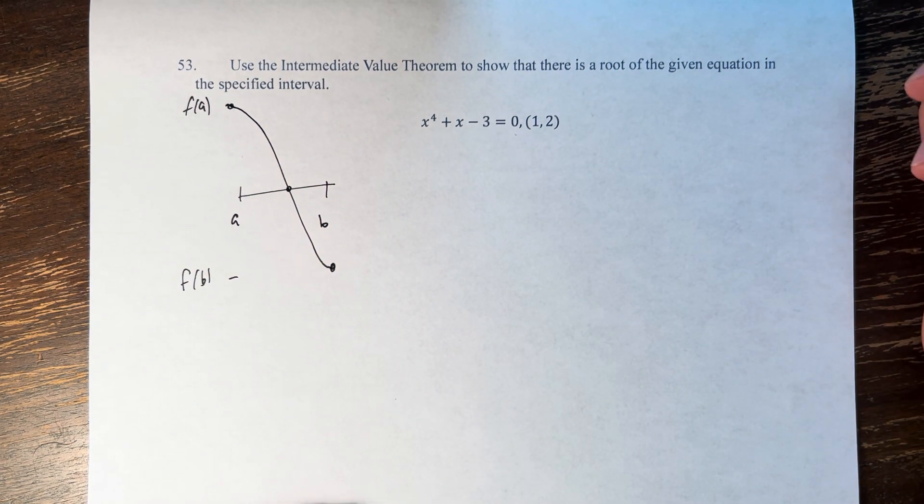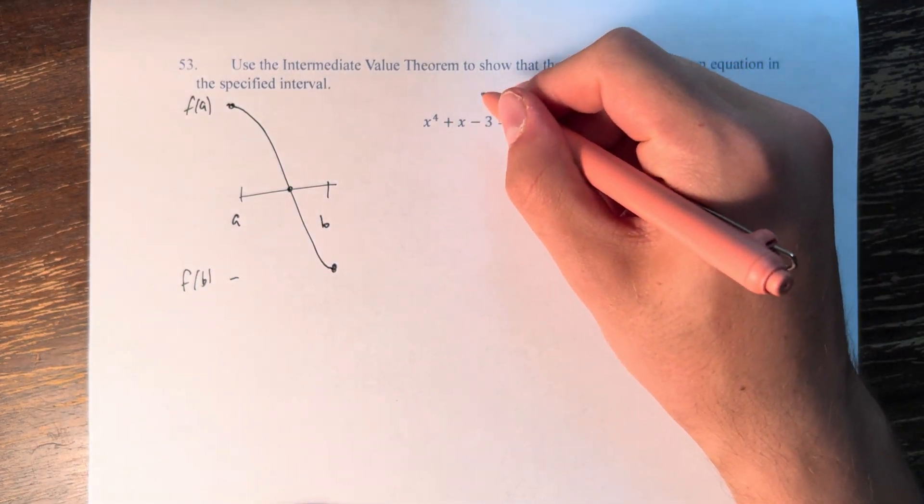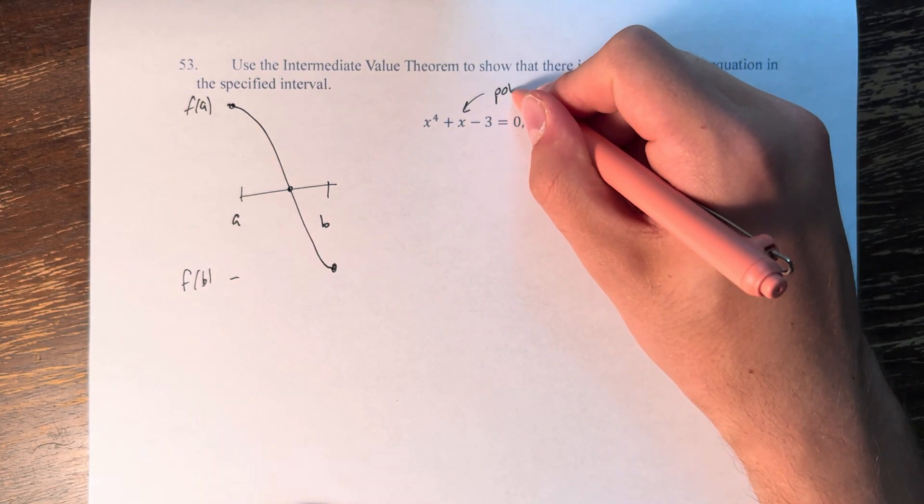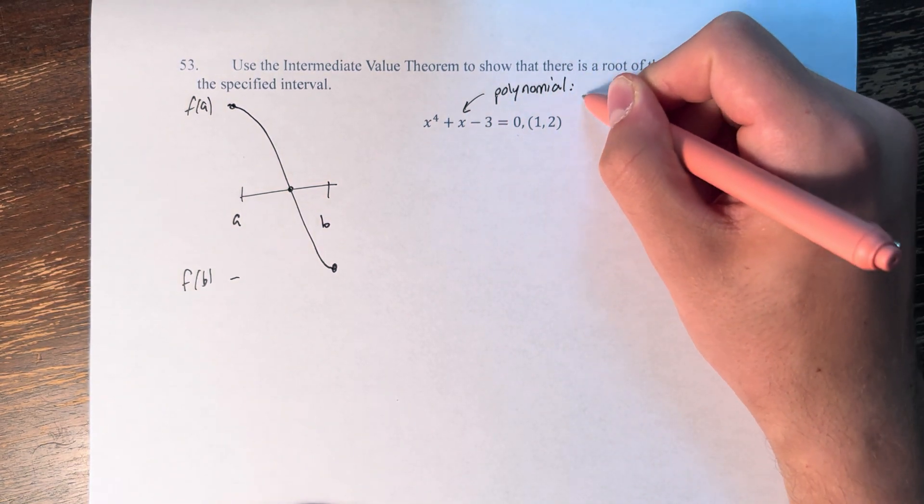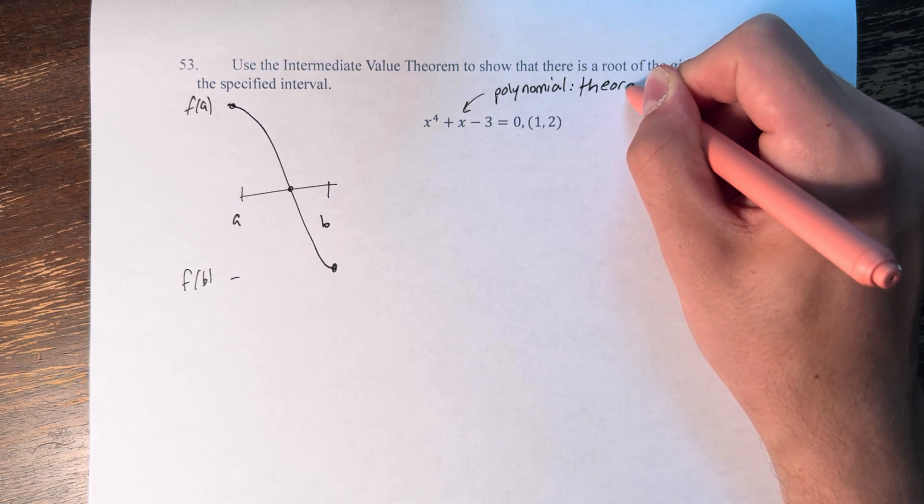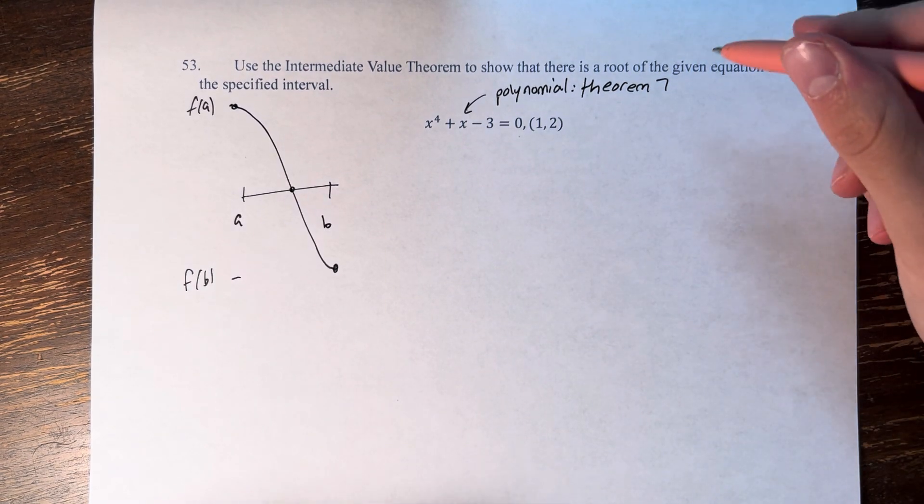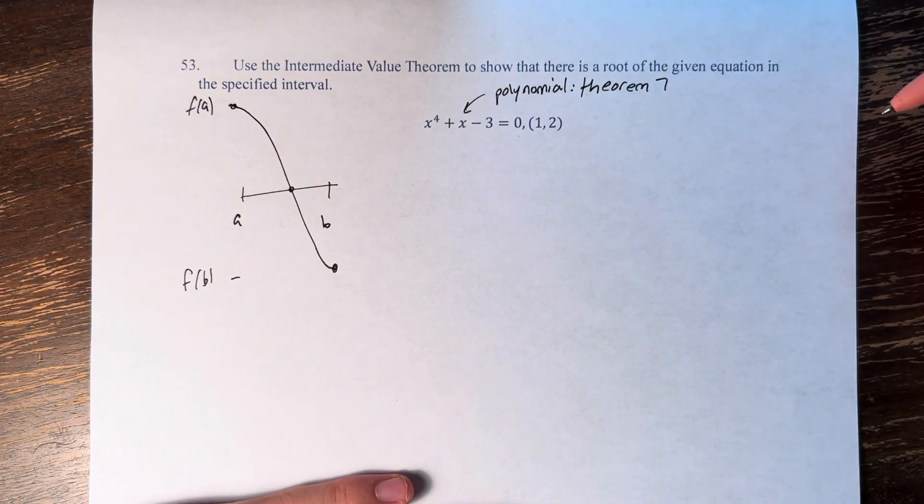So what we can say here is that this function is a polynomial. And therefore, by theorem 7, it is continuous over its domain, which is all real numbers.